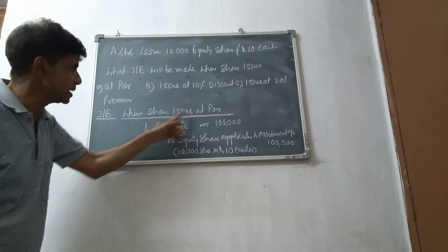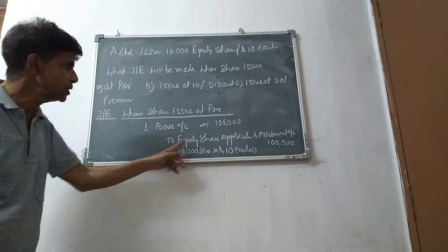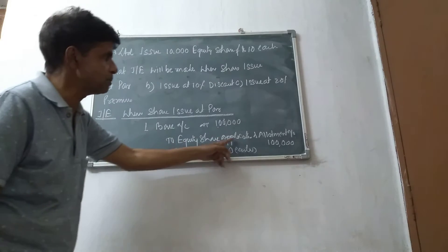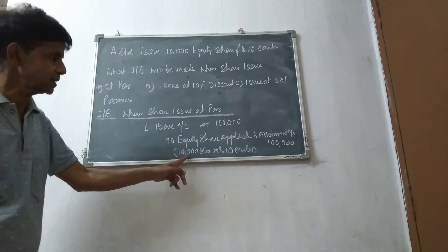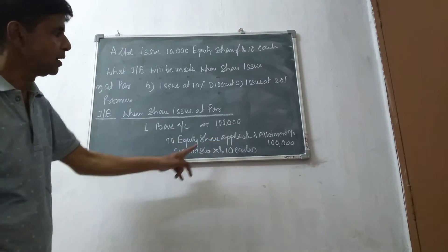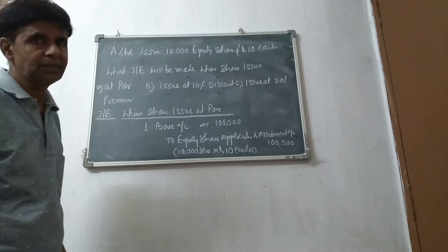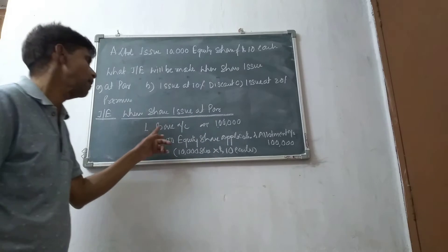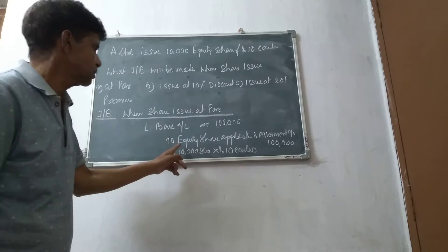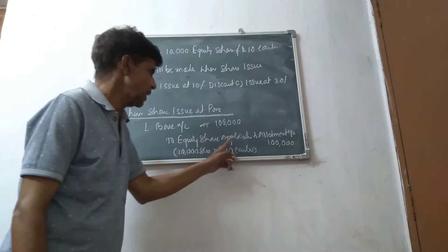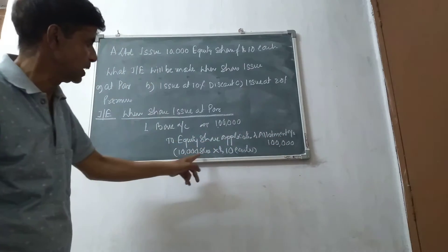When share is issued at par: Bank account debit, to Equity Share Application and Allotment Account — 10,000 shares of rupees 10 each, that is 1 lakh. Bank account to Equity Share Application and Allotment Account, 1 lakh.